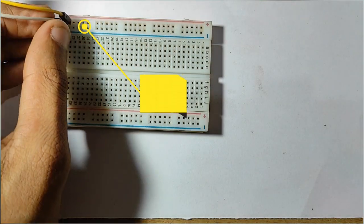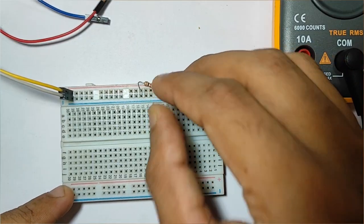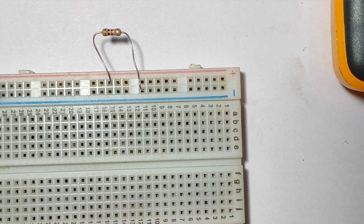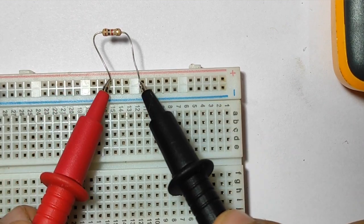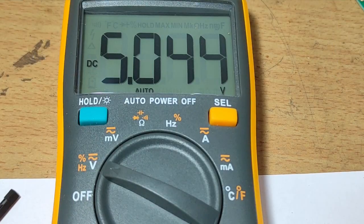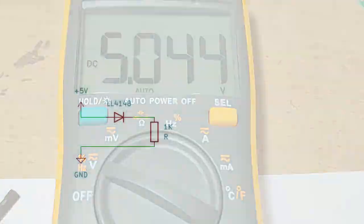Attach VCC, ground, and the resistor. Now test the voltage across the resistor with a multimeter. It is 5 volts.